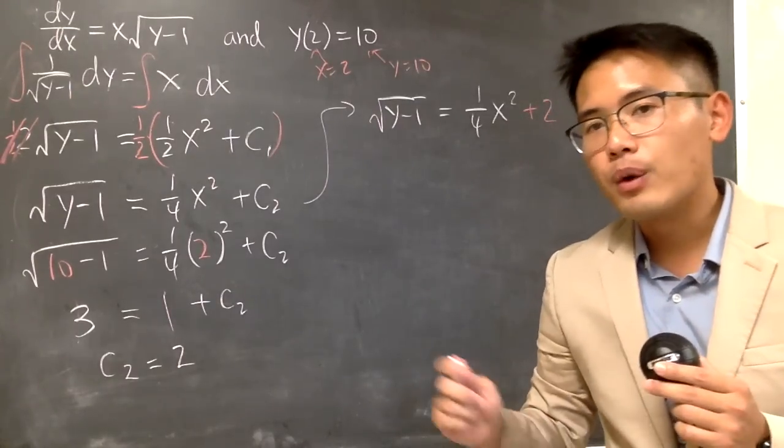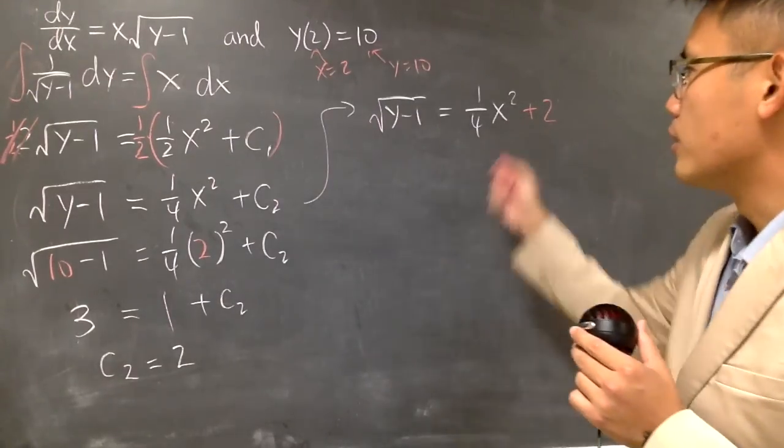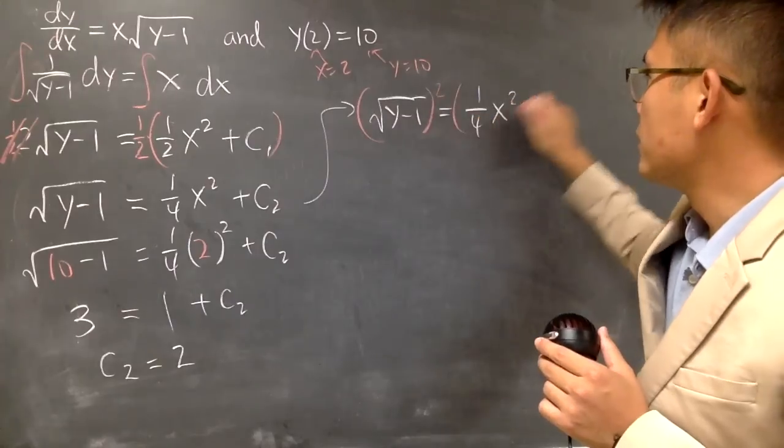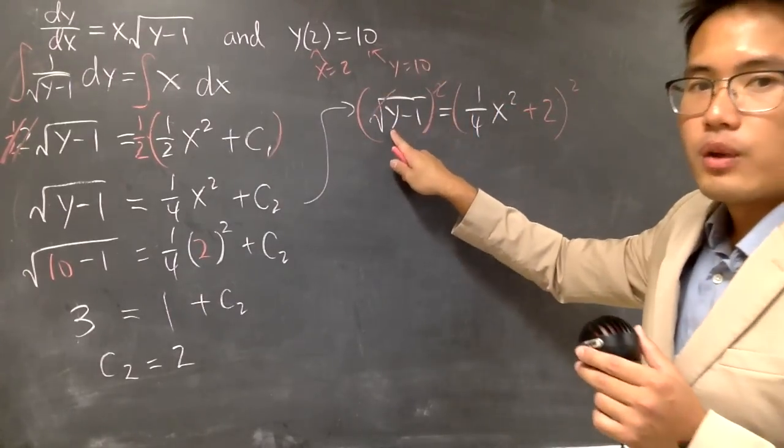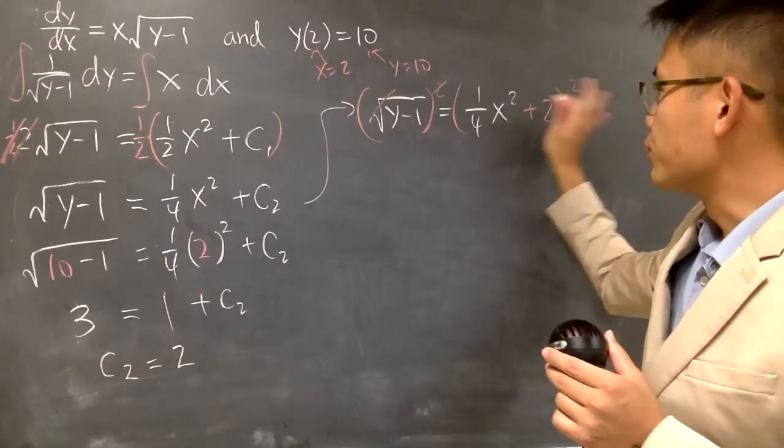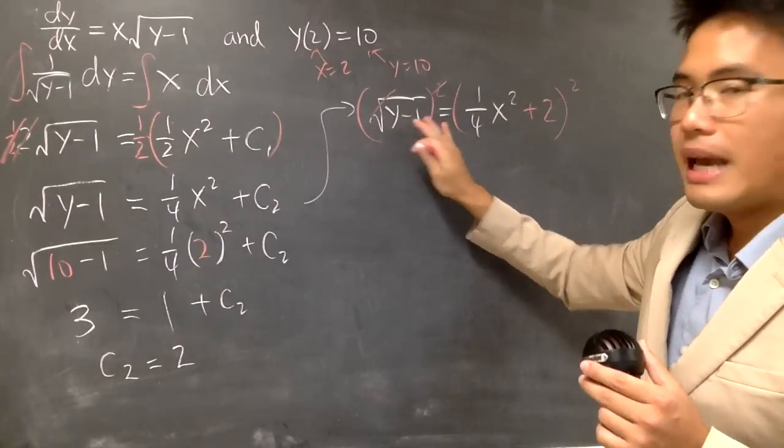And in the end, I want to get the y by itself, so let me just square both sides here. So that cancels as always, and we get the y minus 1. It's equal to this. So also let me add 1 on both sides.